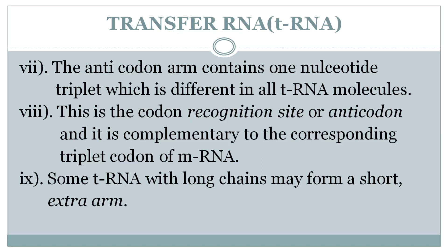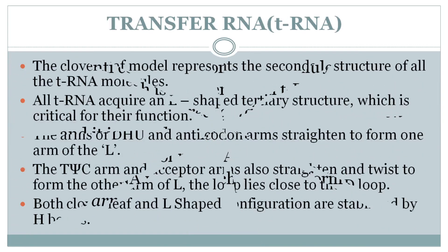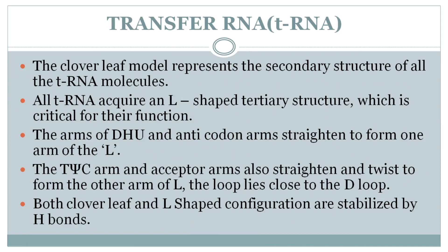mRNA is attached to the anticodon arm of tRNA. Some tRNA molecules with long chains may form a short extra arm, also called the variable arm or invariable arm. The Cloverleaf model represents the secondary structure of all tRNA molecules.